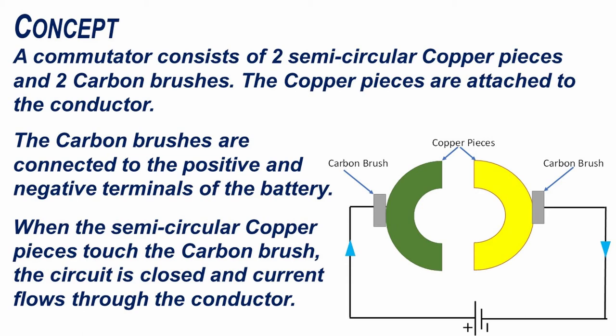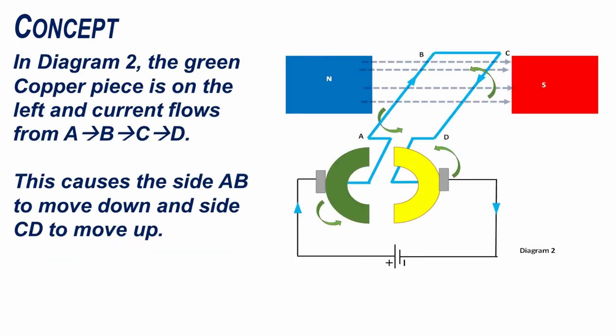In diagram 2, the green copper piece is on the left and current flows from A to B to C to D. This causes the side AB to move down and side CD to move up.